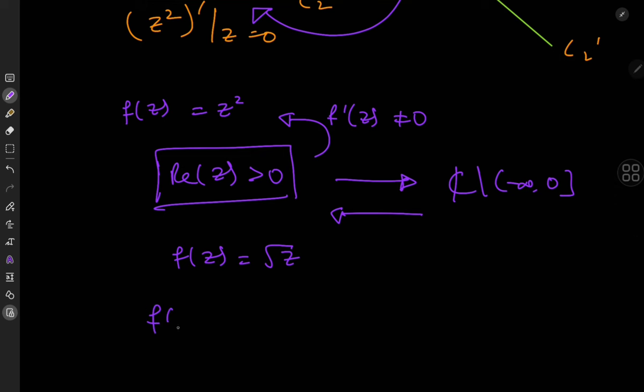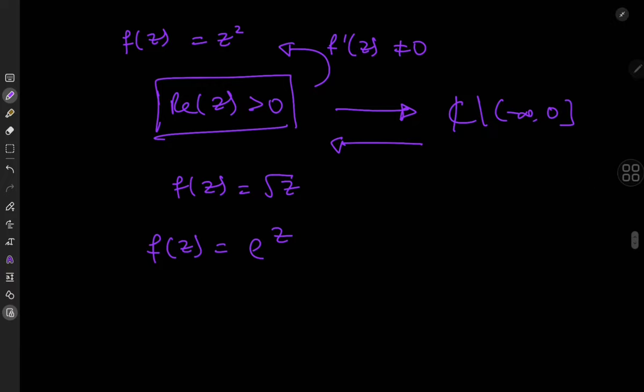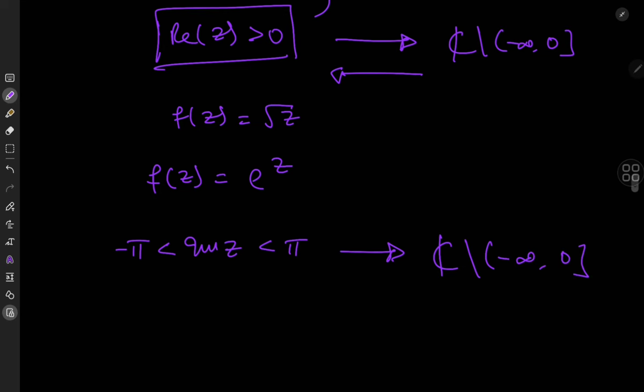And we can do this for other functions too. For example the exponential function f of z equal to e to the z, this function is a conformal mapping that takes the strip Im z less than pi and greater than negative pi to the slit plane c excluding negative infinity to zero. And of course its inverse function maps the slit plane onto the strip conformally as well.